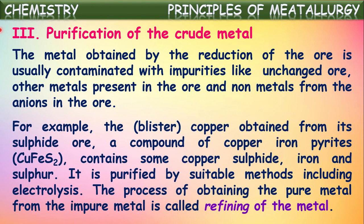For example, the copper obtained from its sulfide ore — which we call copper pyrites, a compound of copper, iron, and pyrites — contains some copper sulfide. Even after the extraction of crude metal from copper pyrites, some amount of copper pyrites may remain in the form of copper sulfide. Iron and sulfur will also remain along with the crude copper extracted. So it is purified by suitable methods including electrolysis.